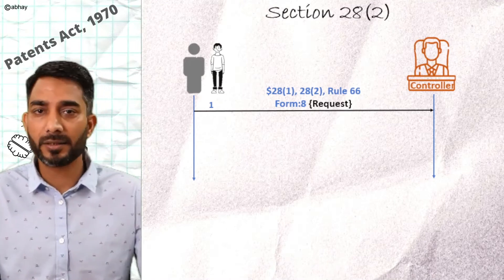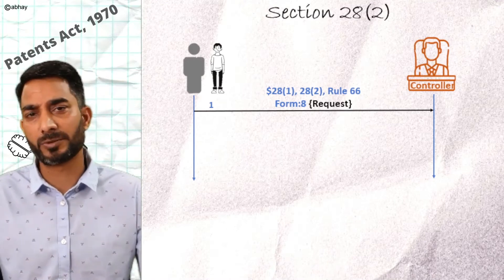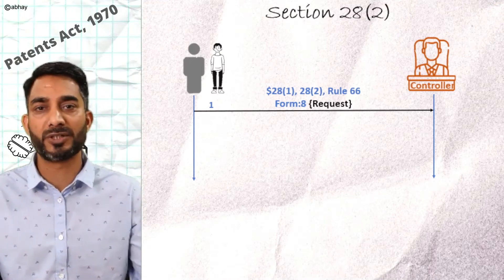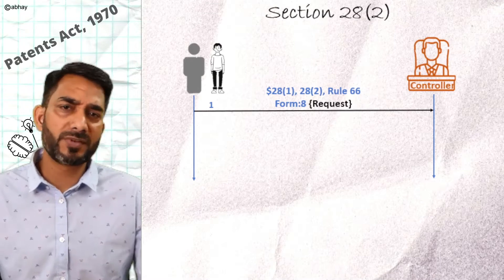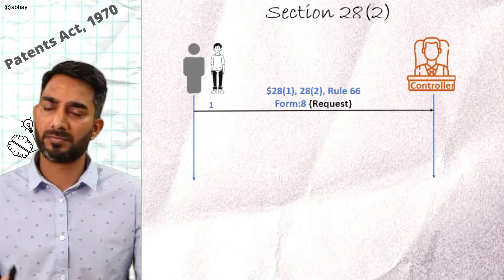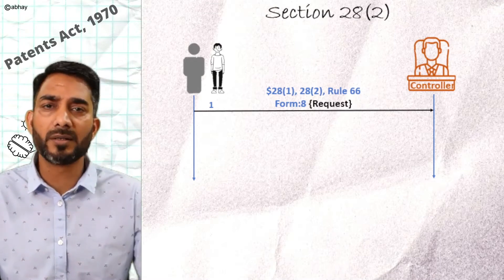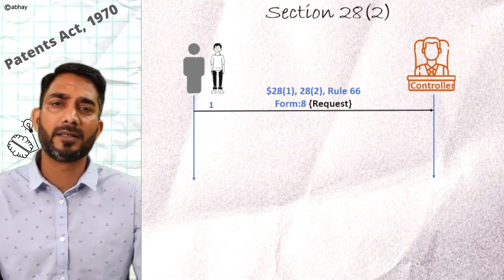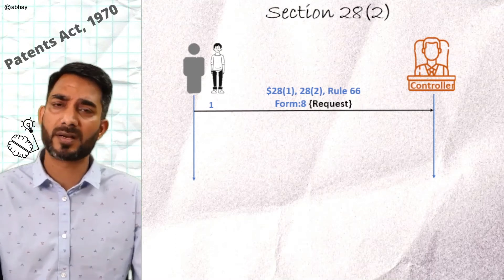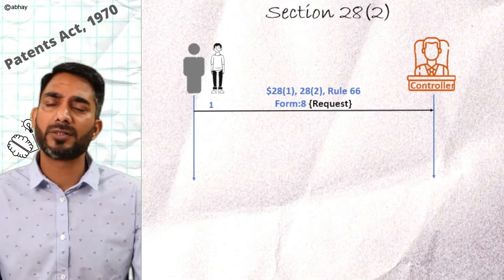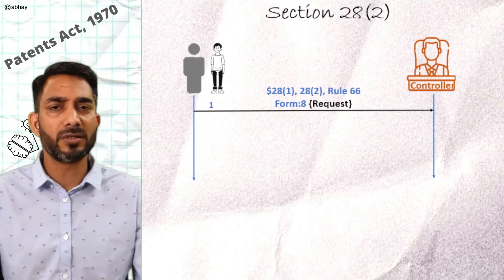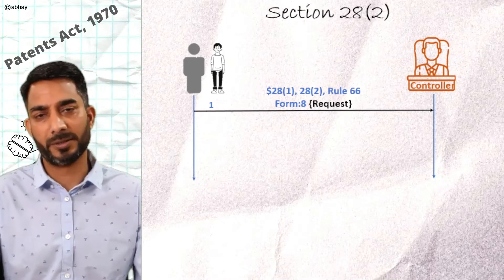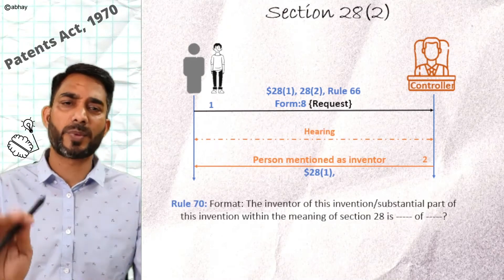They use Form 8 and provide all the relevant details with respect to why they are approaching the controller and on what basis they think the person's name should be mentioned as inventor. Upon receiving such a request from the applicant alone or with the claimant, the controller goes over the request, verifies the details, and may hear them as well to better understand the case. Thereafter, the controller issues a decision allowing mention of the person's name as inventor as per Section 28.